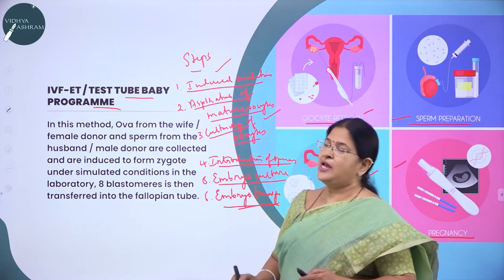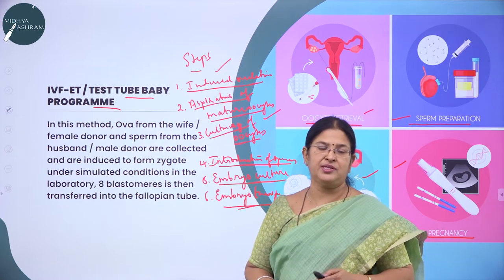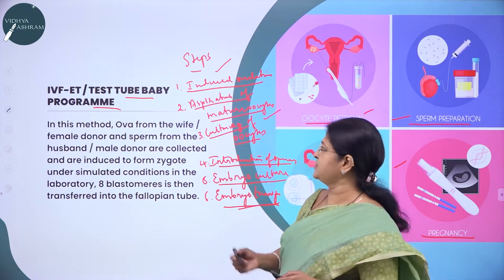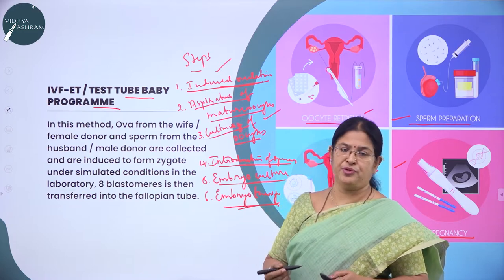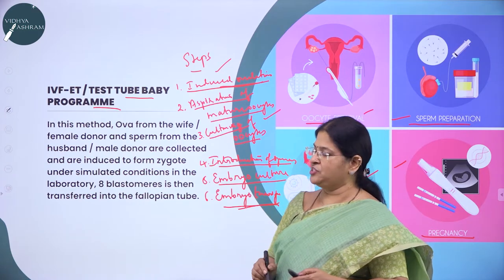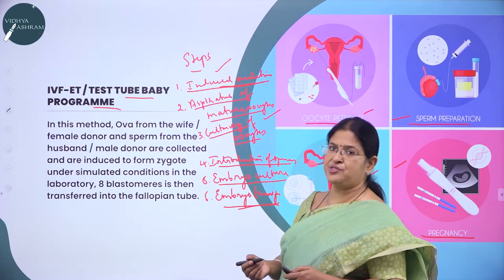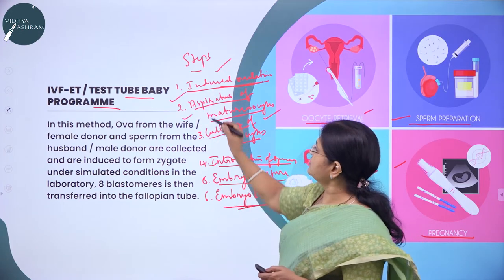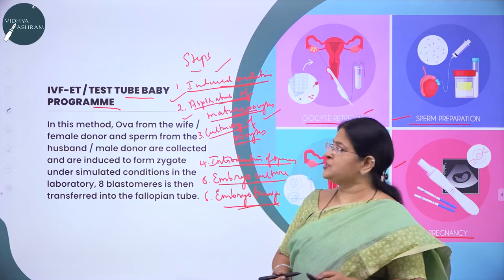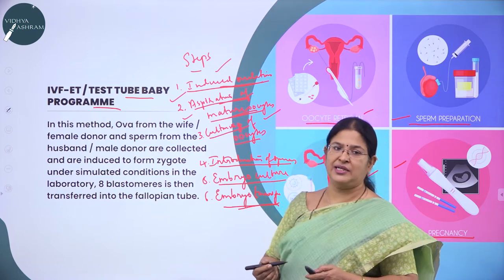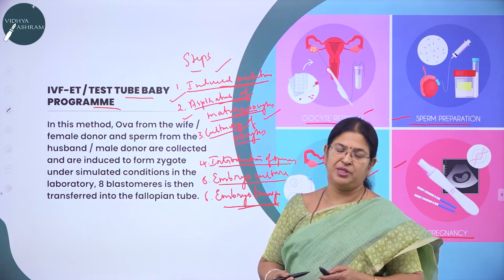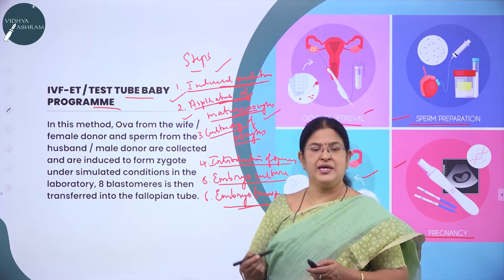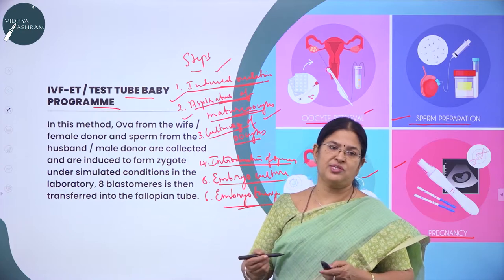Induced ovulation is achieved by inducing hormones called gonadotrophins, which hyperstimulate the ovary to produce more eggs. Normally only one ovum is produced during ovulation, but with gonadotrophins like FSH and LH, the ovary is hyperstimulated to produce more ova. Then, aspiration of mature oocytes is done through laparoscopy — a laparoscope is inserted through a small cut in the abdomen and eggs are sucked out through a syringe from the ovary.